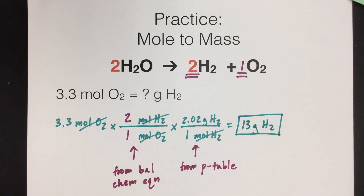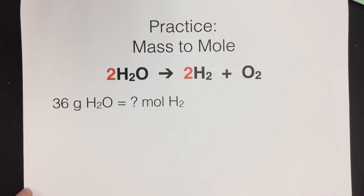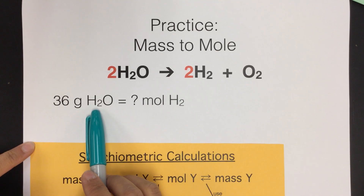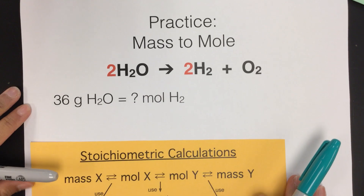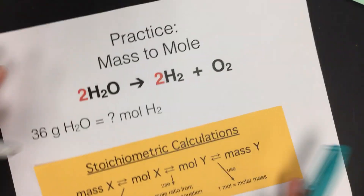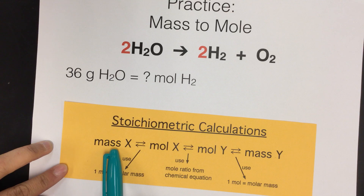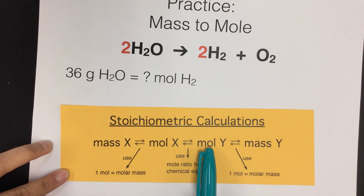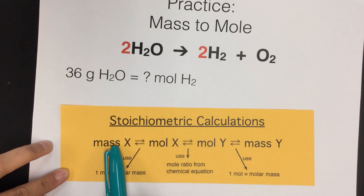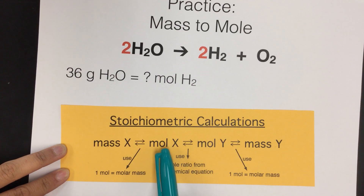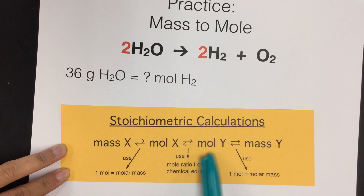Now let's do the reverse: a mass-to-mole problem. This time we are given 36 grams of H2O and want to figure out how many moles of H2 that equals. We're starting with a mass of X (H2O) and converting to moles of Y (H2). We first need to convert the mass of water into moles of water, then convert moles of water to moles of H2 using the mole ratio.